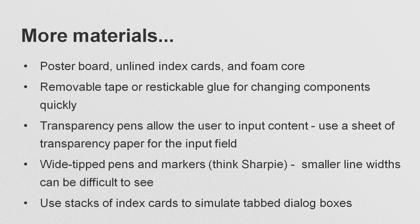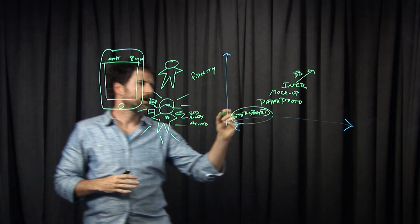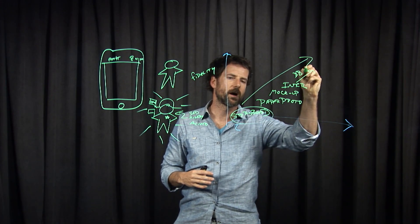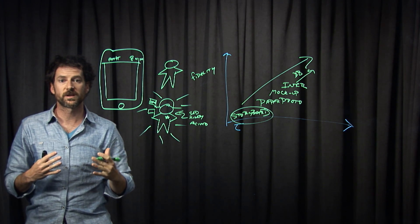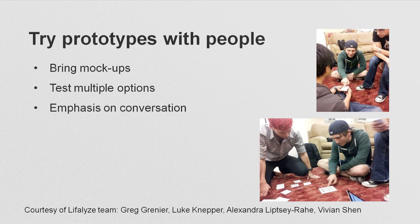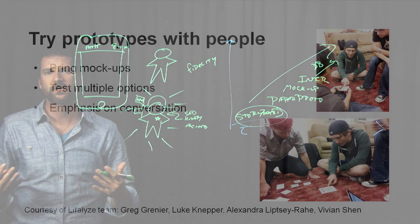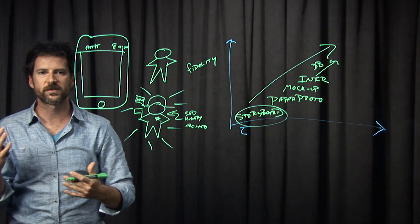Here are just some examples of other stuff you can use — from Sharpies to poster board; index cards are handy. The goal of prototypes, because you are iterating over time, is to get feedback from stakeholders: other members of your design team, users, management, the client, everybody. If you can bring in multiple different prototypes, you're going to get much better feedback. You want the emphasis to be on the conversation.